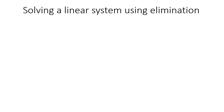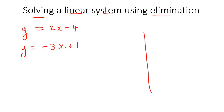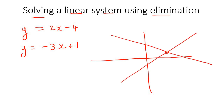In this lesson, we are going to learn how to solve a linear system using elimination. In the previous lesson, I showed you that if they give you two equations, for example y equals 2x minus 4 and y equals minus 3x plus 1, then there is a way to draw those two lines and find out where they intercept by just looking at the graph. That is called the graphing method.